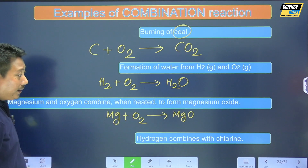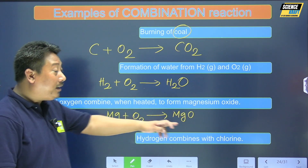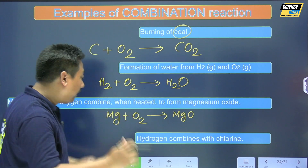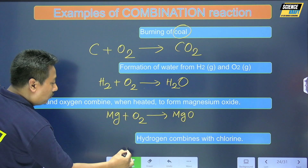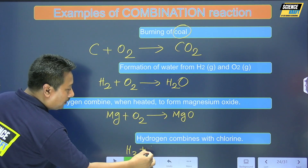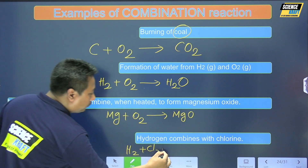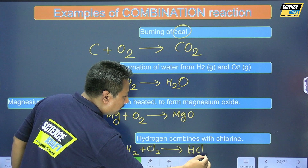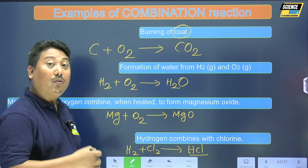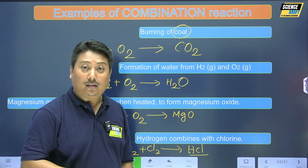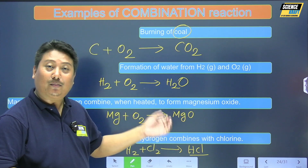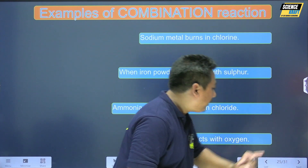Hydrogen gas combines with chlorine gas to produce hydrogen chloride gas, HCl — another example of a combination reaction.